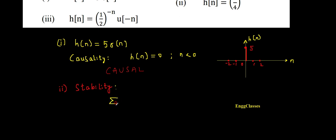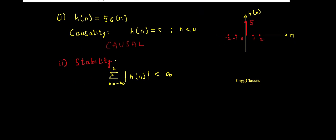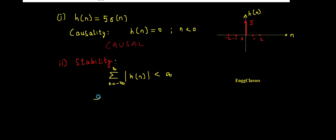In summation from minus infinity to infinity, magnitude of h of n must be less than infinity. If this condition is satisfied, the given system is stable straight away. Consider this image. Just add up all the values from minus infinity till infinity.